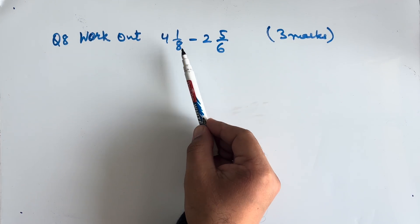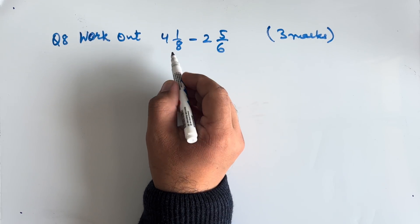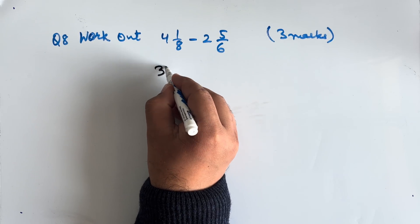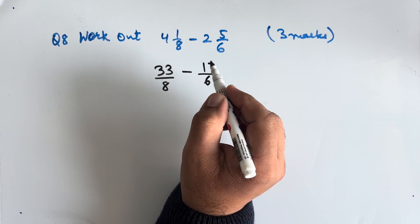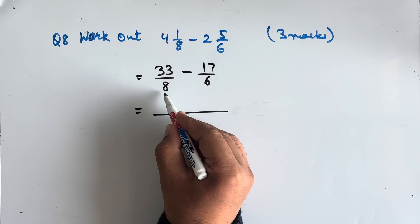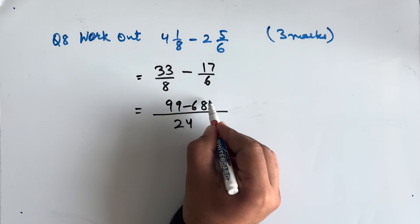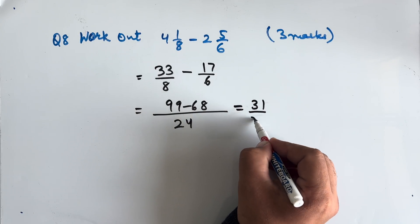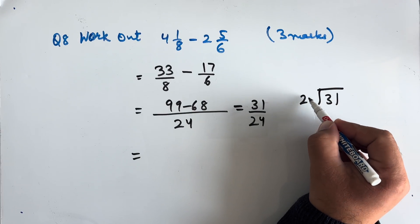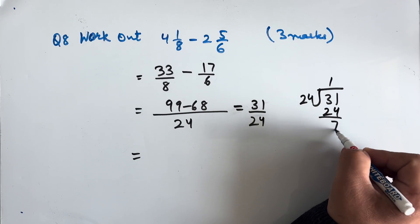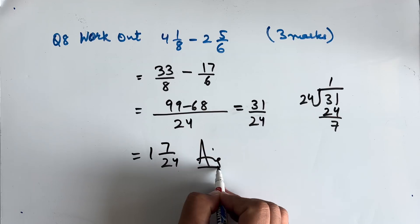Question 8: Work out 4 and 1/8 minus 2 and 5/6. 4 and 1/8 becomes 33/8, and 2 and 5/6 becomes 17/6. Taking LCM of 8 and 6, which is 24, we get 99 minus 68 = 31/24. Writing as a mixed fraction: 31 divided by 24 gives 1 remainder 7, so the final answer is 1 and 7/24.